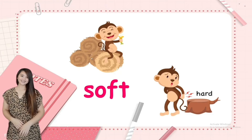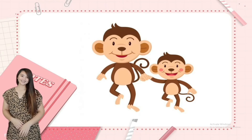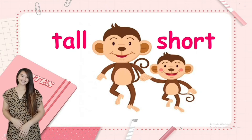This monkey is sitting on soft hay — soft. And we also have hard. Soft and hard are opposite ways. Tall and short are also opposite ways.